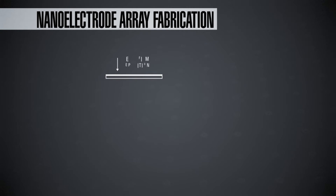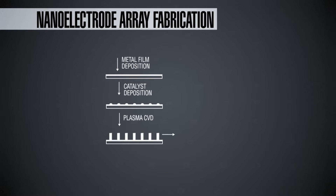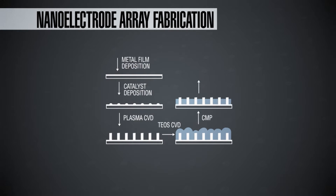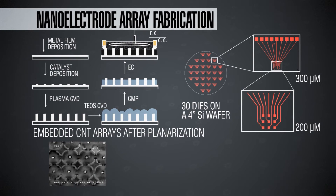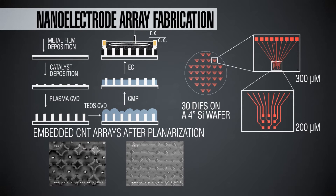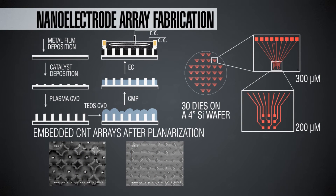To create a nano-electrode array using carbon nanofibers, we start with a silicon wafer — 100, 150, or 200 millimeter. First, you deposit a metal film such as tungsten, tantalum, or titanium, commonly used in microelectronics fabrication. Next, you deposit a catalyst metal layer of nickel, cobalt, or iron — just a few nanometers thick, sputtered using a sputtering machine. Then you introduce a hydrocarbon source such as methane, ethane, or ethylene, and use plasma chemical vapor deposition to grow the carbon nanofibers.